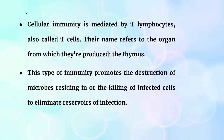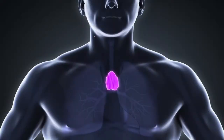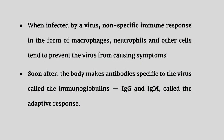Memory B cells and memory T cells are mostly present in vaccinated individuals and protect against most infections. T cells are responsible for cellular immunity. 'T' stands for thymus — the organ from which T cells are produced. T cells destroy infected cells and the sources of infection to prevent further spread.